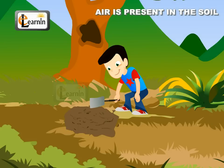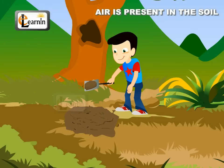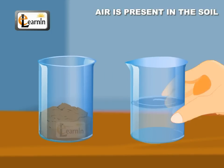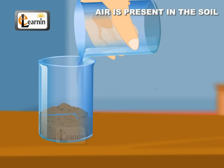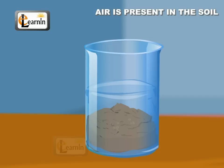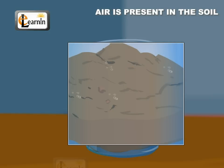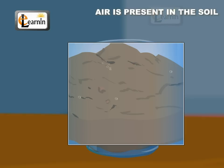Dig out a small lump of soil from your garden and place this lump of soil in a small vessel. Pour a small amount of water on it. Bubbles are observed coming out of the soil. This is because the water molecules displace the air present between the soil particles, and the air rises and escapes from the surface as bubbles.